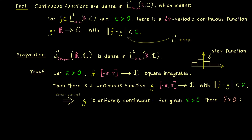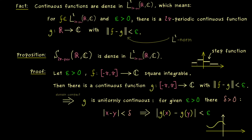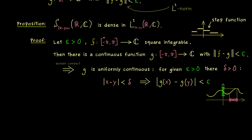The delta works on the x-axis and the epsilon works on the values of g. Visually, we have a delta neighborhood on the x-axis, and the claim is that the corresponding values always lie in the epsilon neighborhood. That's the whole statement of uniform continuity, and now I want to use that to define a suitable step function.